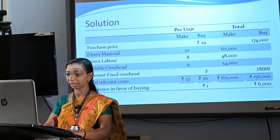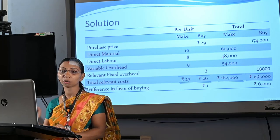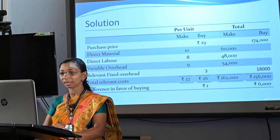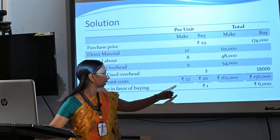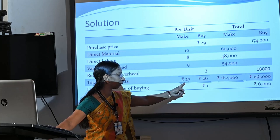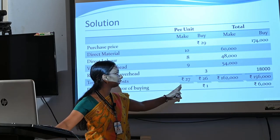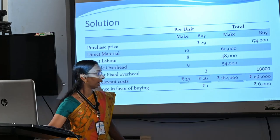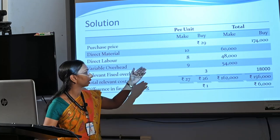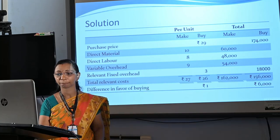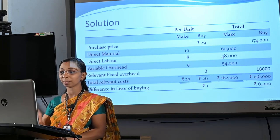Now we have to compare the total cost of purchase and total cost of manufacturing. The total cost of purchase is Rs. 26 per unit and total cost of manufacturing is Rs. 27 per unit. That means total cost of manufacturing is Rs. 1 more per unit, a total saving of Rs. 6,000 while purchasing the product from outside market. Therefore, the product should be purchased from the outside market — that will be the better decision.